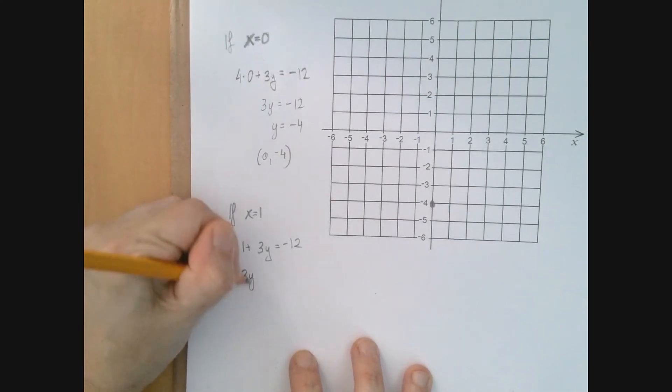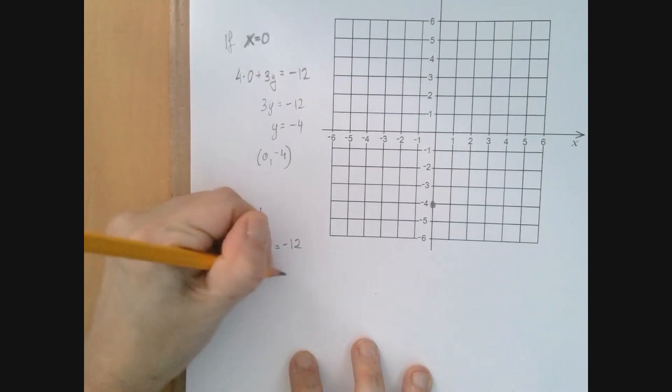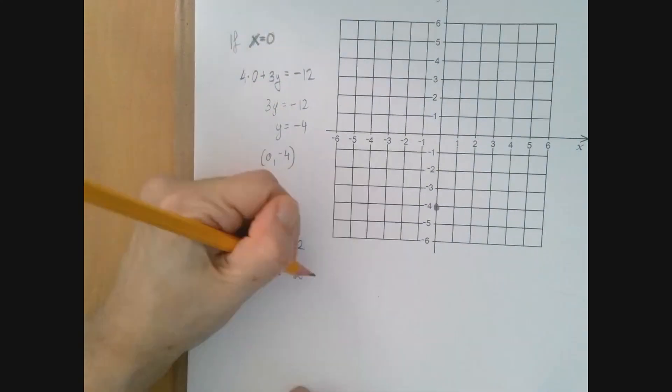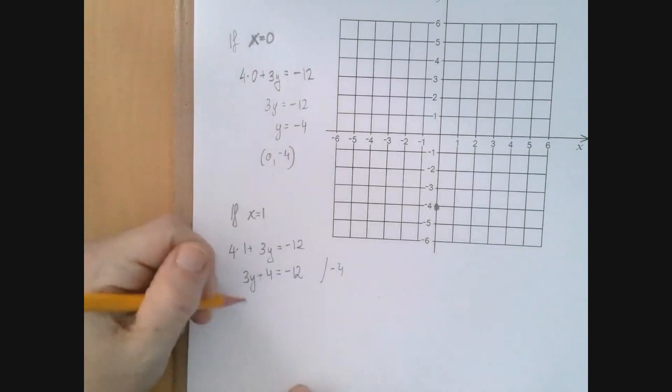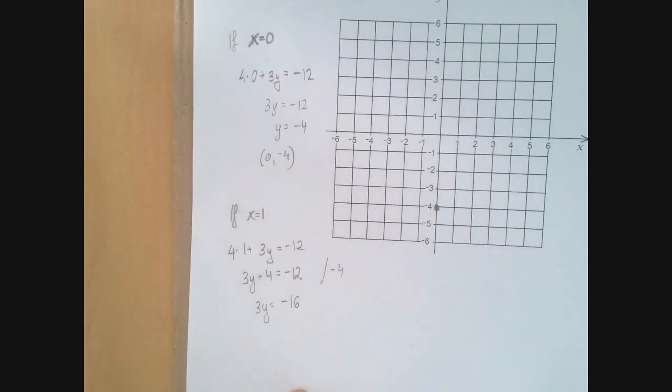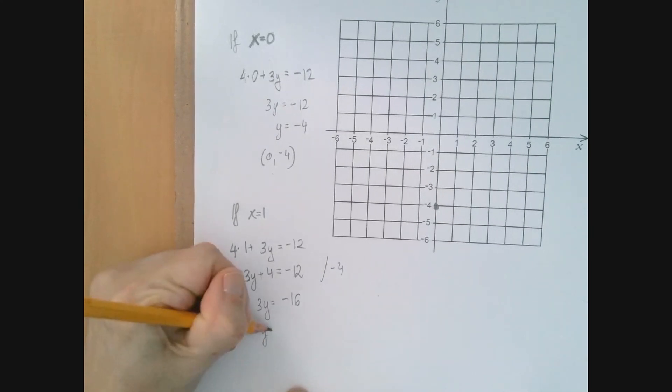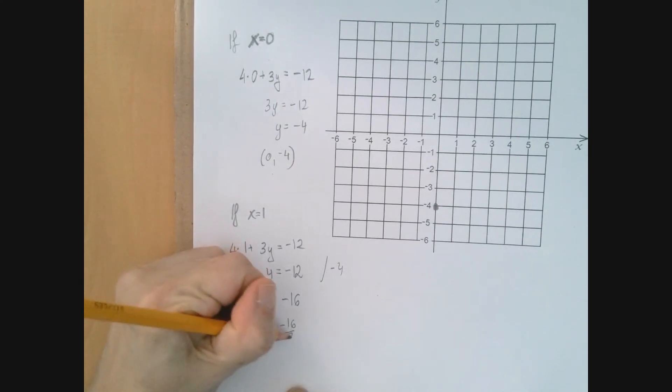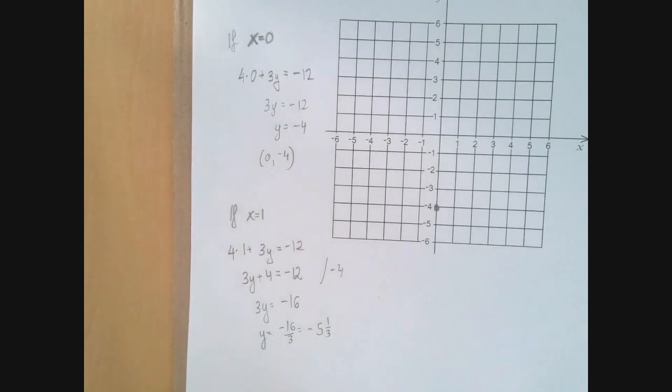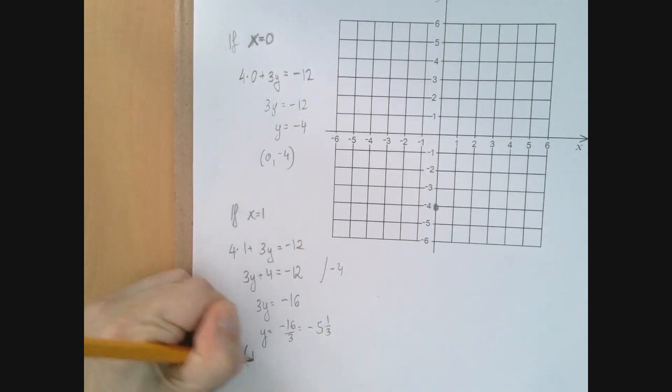So 3y plus 4 equals negative 12. And we have to solve this equation for y. So we're going to subtract 4. 3y is negative 16. So y equals negative 16 over 3, or negative 5 and 1 third. So we found a point (1, -5⅓).